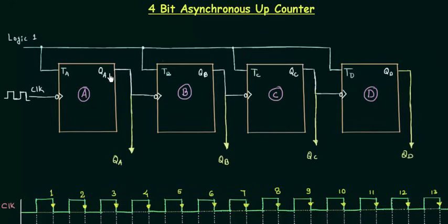QA, the output of the A flip-flop, is given as the clock to the B flip-flop. Similarly QB is given as the clock to the C flip-flop, and QC is acting as the clock for the D flip-flop. They are asynchronous counters and definitely up counters because we are considering QA, QB, QC and QD as the output.